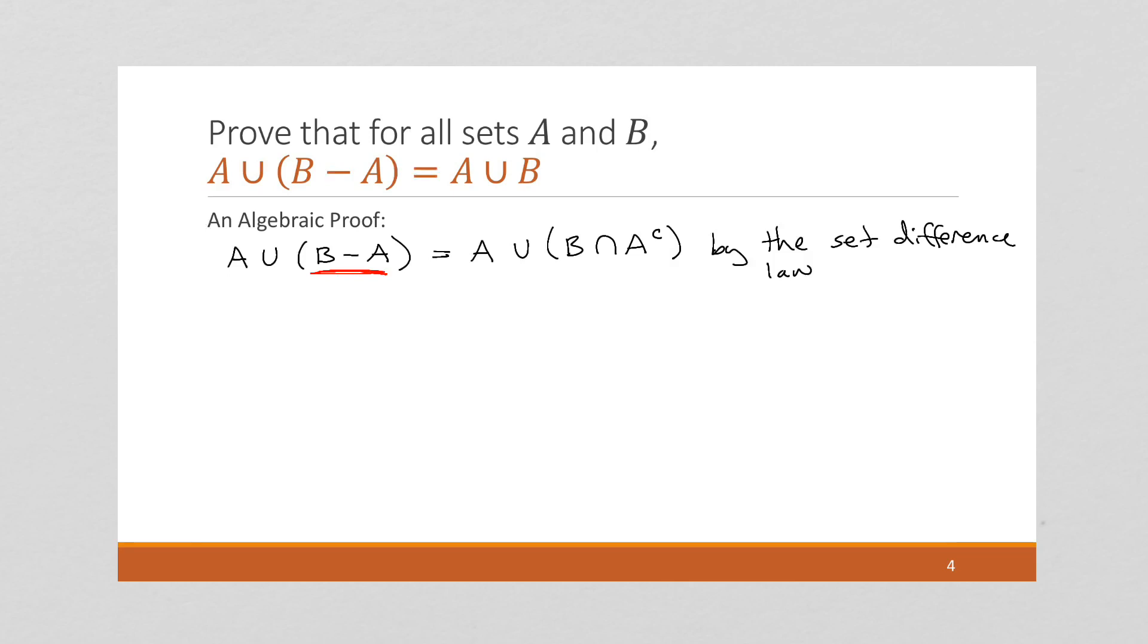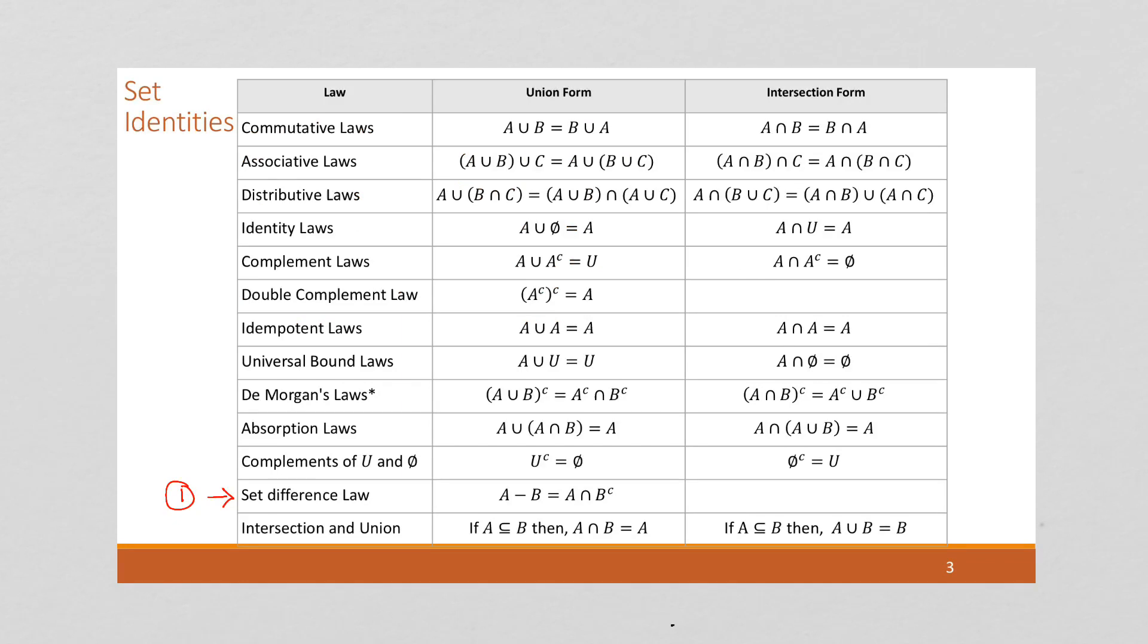So now I'm noticing that I have an intersection in parentheses and a union with A outside of parentheses. And if we come back here, that's going to look a lot like this distributive law, union form. So that's what we're going to use next.